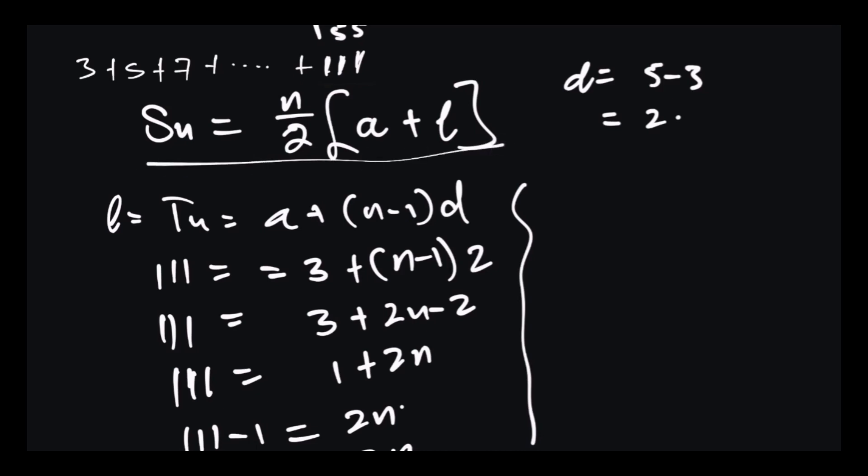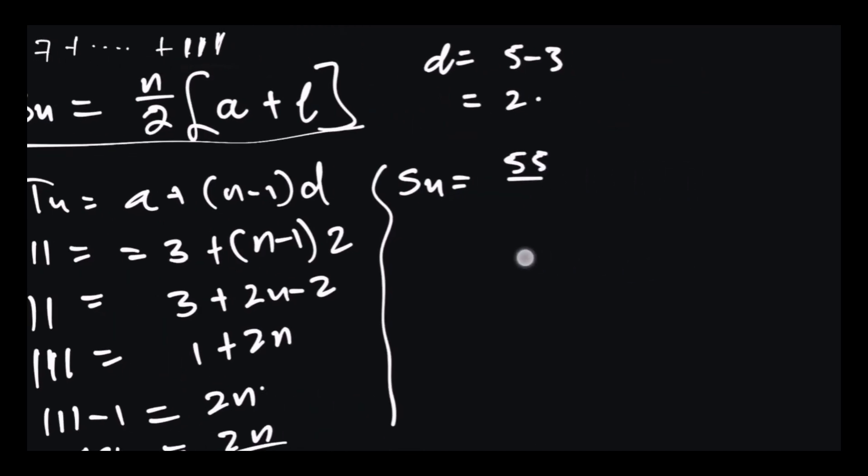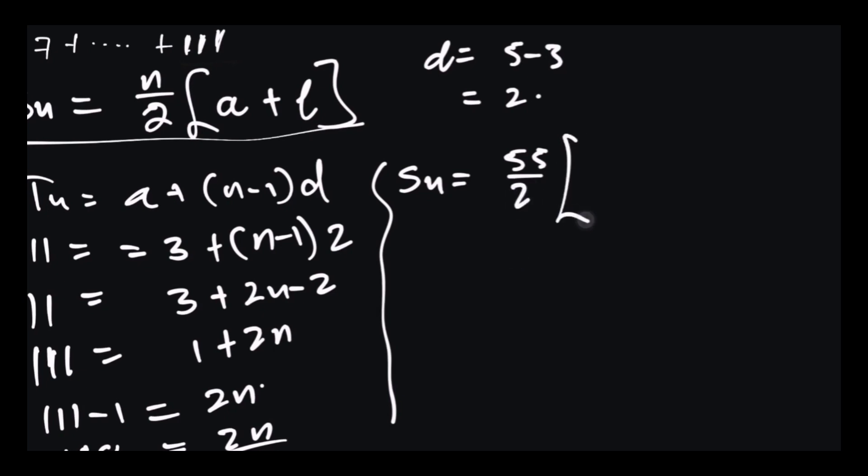Our Sn will be equal to, what is n? We just found it, it's 55, divided by 2, times what's a, that's 3, plus what is l, our l was given initially and that's 111. So let's use a calculator to find the final value of this. So that's gonna be 55 divided by 2 times 3 plus 111. So we get Sn equals 3135. So that's our final answer.